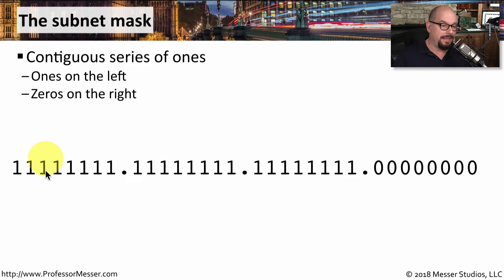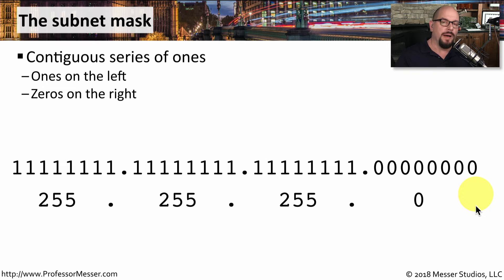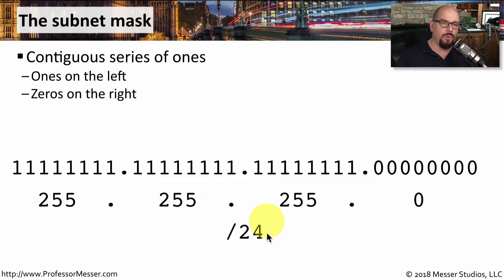So if we have a subnet mask like this one that has three octets of all ones, we know that this subnet mask is 255.255.255.0. You might also see this subnet mask written as a slash 24 — that means there are 24 bits in this particular subnet mask in these first three octets.